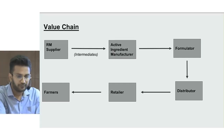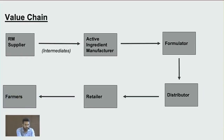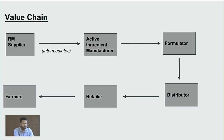The agrochemicals value chain is very similar to the pharma industry. It starts with an RM supplier providing intermediates to an active ingredients (AI) manufacturer. The AI manufacturer supplies to a formulator — companies like UPL or Dhanuka. The formulator then supplies to a distributor, who then supplies to the retailer, which is the channel closest to the farmer.